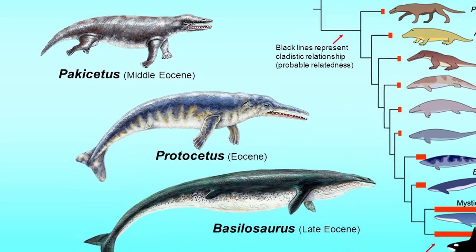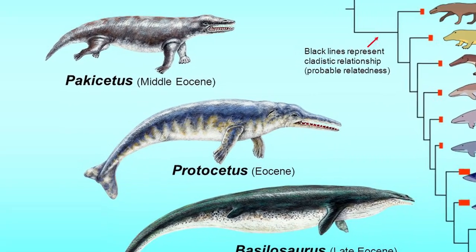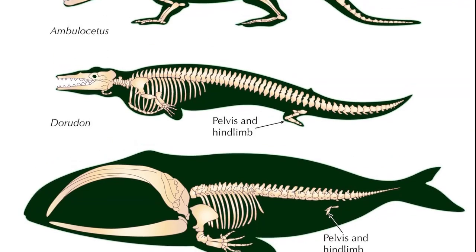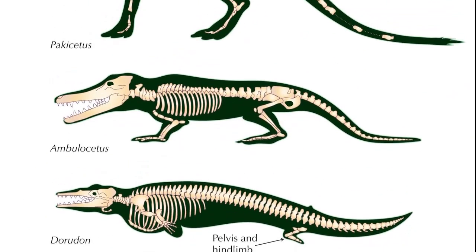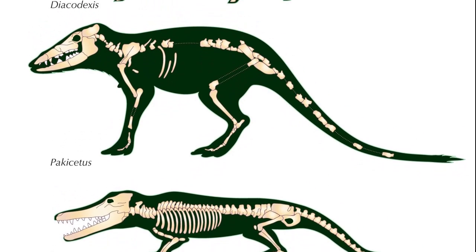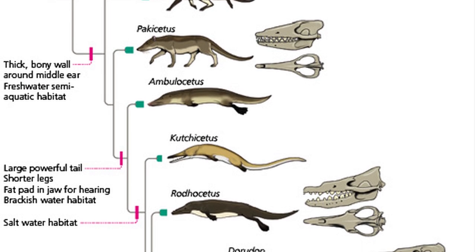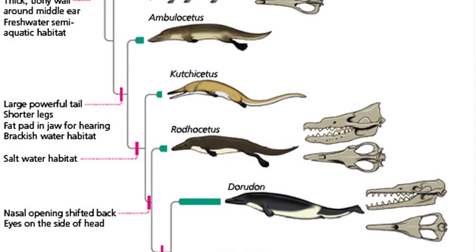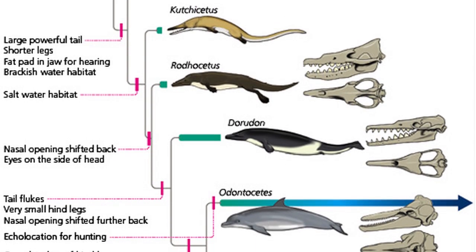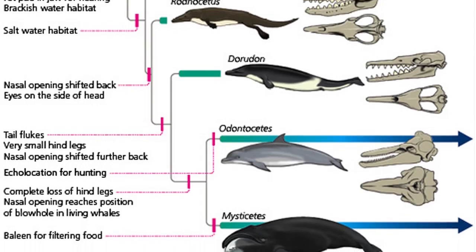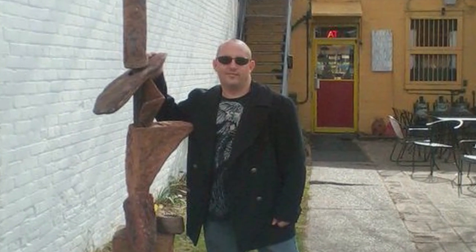When asked for a transitional species, evolutionists will often refer to whales. They present fossil after fossil of supposed transitionals, but they never explain how they know any of these fossils ever reproduced. As Dr. Kent Hovind once said, the only thing a fossil can tell you is that it died. It cannot tell you if it had any babies, let alone different ones. To date, there is no proof that any of these supposed whale ancestors ever gave birth to each other, let alone a modern whale. Seems like a lot of evolutionary assumption.